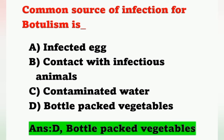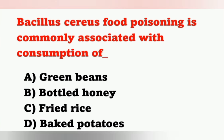The next question: Bacillus cereus food poisoning is commonly associated with consumption of which food? Options: Option A, green beans; Option B, bottled honey; Option C, fried rice; Option D, bagged potatoes.